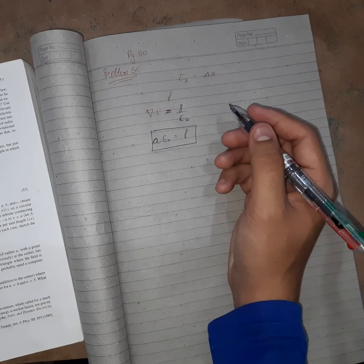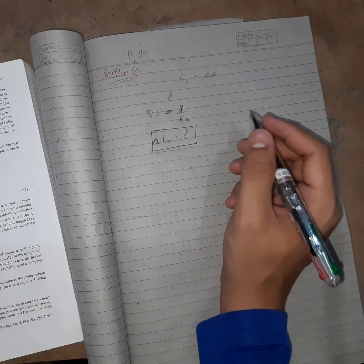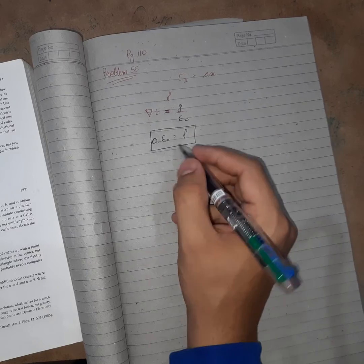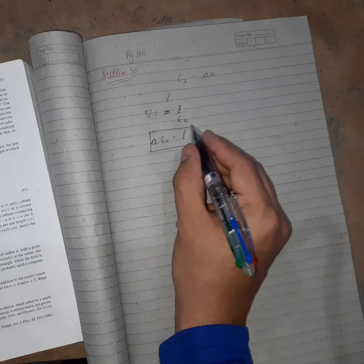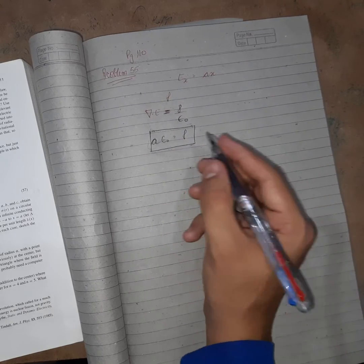He's saying that the field points in a particular direction if the charge density is uniform. Here it is not varying with the direction, this is uniform.